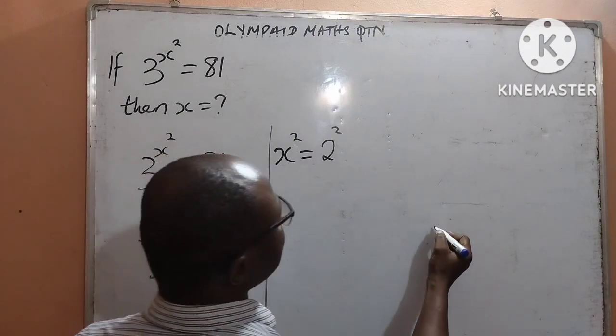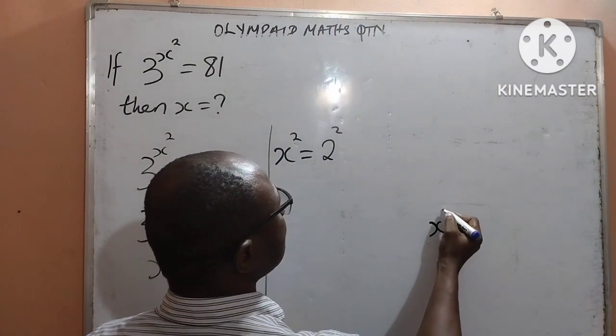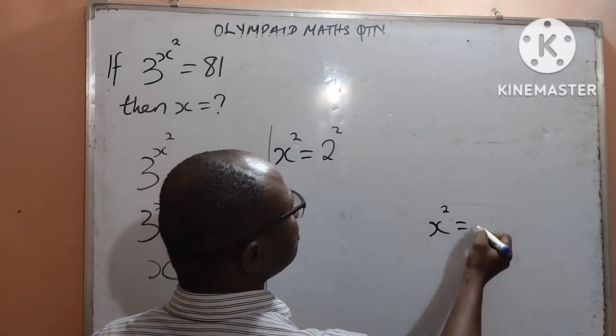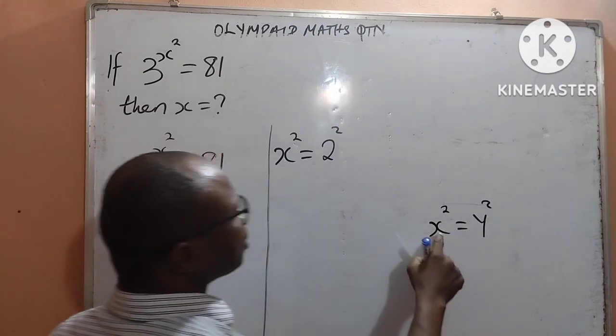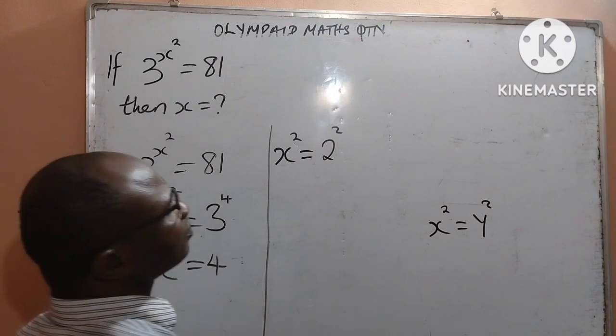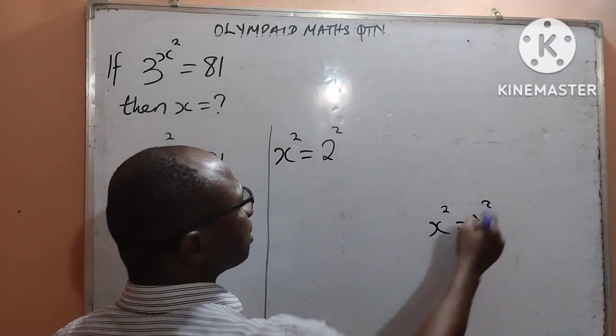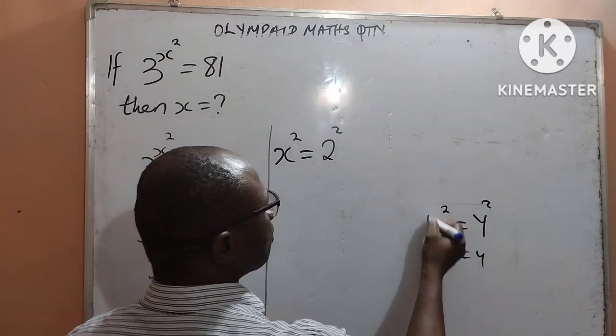Also, the law of indices says that if x to the power of 2 equal to y to the power of 2, once the powers are equal, it makes the bases to be equal.